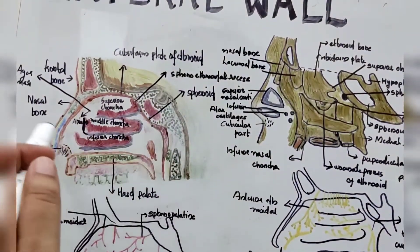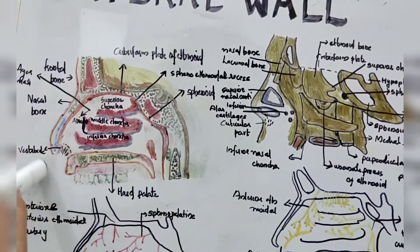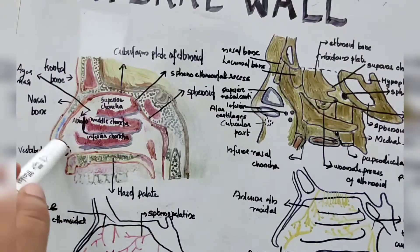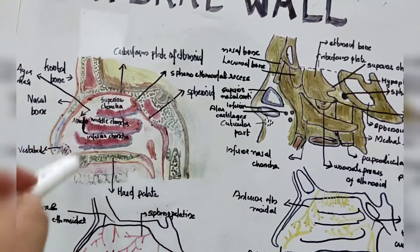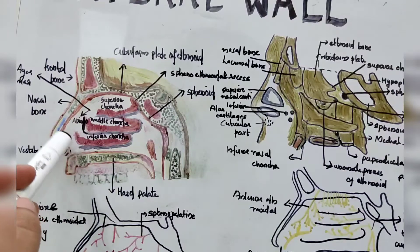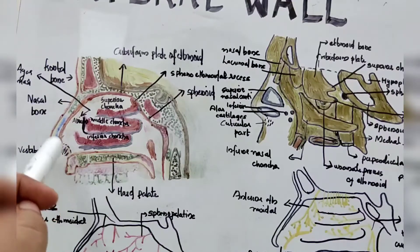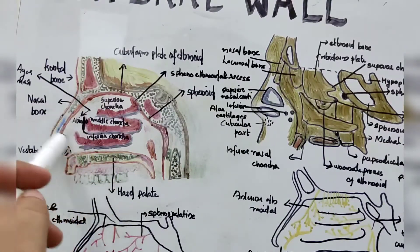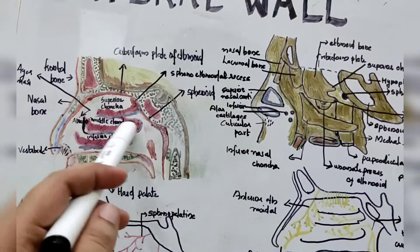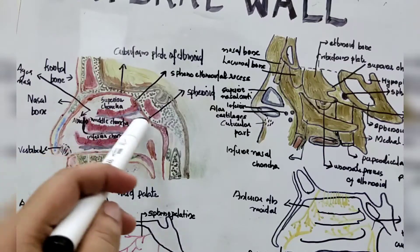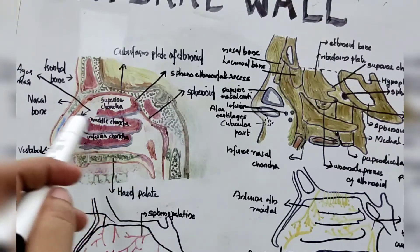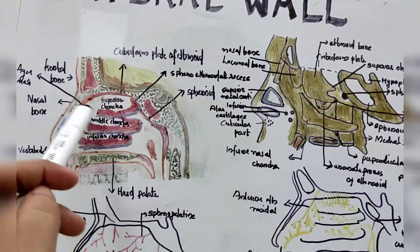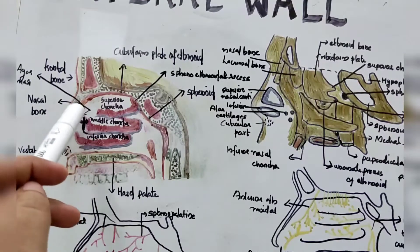The lateral wall of the nose can be divided into three parts. The anterior part is characterized by a small depression containing small, short, and curly hairs, and that part is called the vestibule. The middle part is called the atrium of the middle meatus — it is the space in front of the middle meatus, which is the space below the middle conchae.